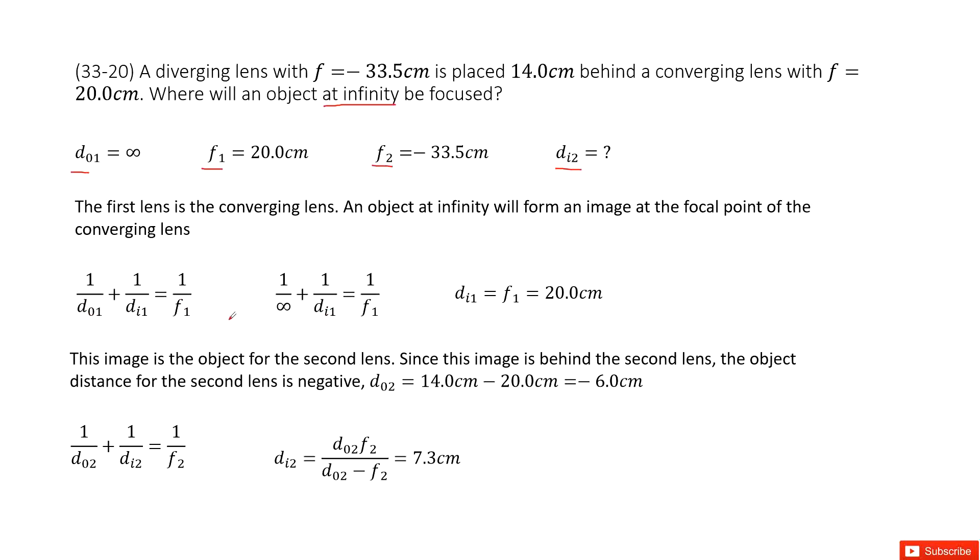As we know that dO1 is infinity, this term becomes 0. Then 1/di1 = 1/f1. From this equation, we get di1 equals f1, which is 20 cm. We've found the image distance for the first lens.